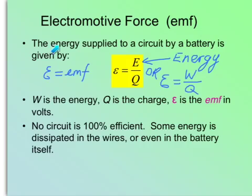Here it says the energy supplied to a circuit by a battery is given by this formula. Either E or W both stand for energy. Q is the charge.